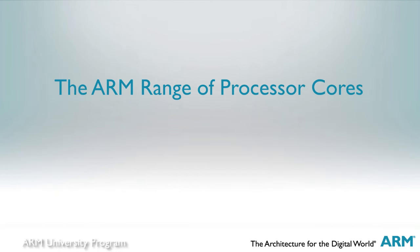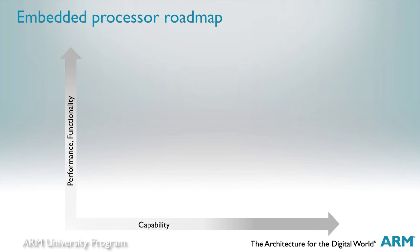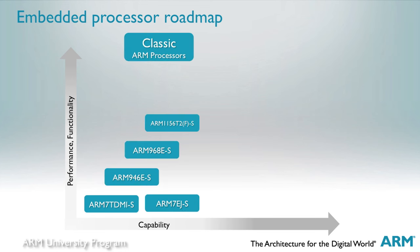We're now going to look at ARM's current range of processor cores. One of the reasons why ARM cores are so popular is we support a range of performance and capability points that is simply unequalled by any other architecture in the world today. Many of you will first have learned of ARM through the success of the ARM7 TDMI processor core. That was widely adopted by the cell phone industry from the mid-90s onwards, and was the foundation for ARM's early success.